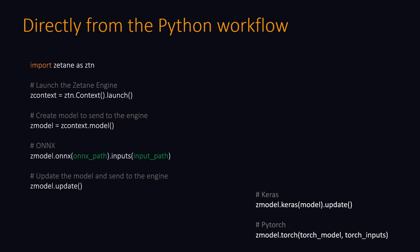Directly from the Python workflow, we made it as simple as possible. You only have to import Zetane, launch the engine, create an object that will contain your model, and then pass your ONIX, Keras, or PyTorch model to the object. Finally, you can display your model in Zetane by using the update call, and you'll be able to see the model and access all its components easily.